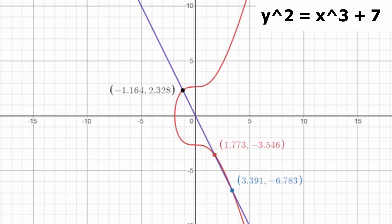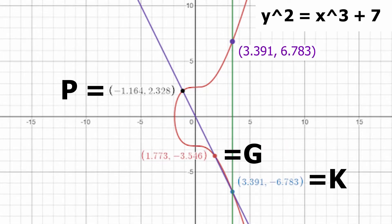Graphically, it looks like this. Here is the curve made by the equation y-squared equals x-cubed plus 7. If we set the point negative 1.164, 2.328 equal to p, and the point 1.773, negative 3.546 equal to g, then the line through them leads to the point 3.391, negative 6.783, which we will set equal to k. However, in order to get the graphic sum of these points, we need to take this point and reflect it across the x-axis, which we represent with the green line. This leads us to the point 3.391, 6.783, which we set equal to r. Notice how the y-coordinate is now positive. This is our sum. So, p plus g equals r, which we found graphically using k.